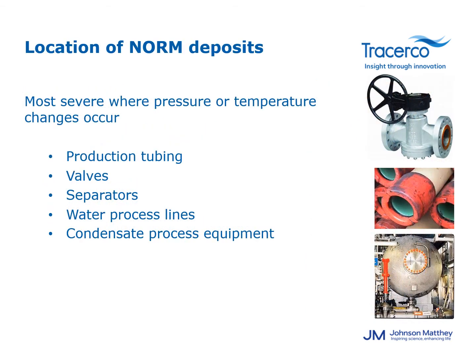With regards to the location of NORM deposits, you can almost guess where you're likely to get these deposits. Wherever you've got the most severe temperature and pressure changes, there is a good possibility that you could encounter NORM in process equipment. Examples include production tubulars, valves, separators, water process lines and condensate process equipment. In all of these locations, there is a very good chance that you can encounter NORM.